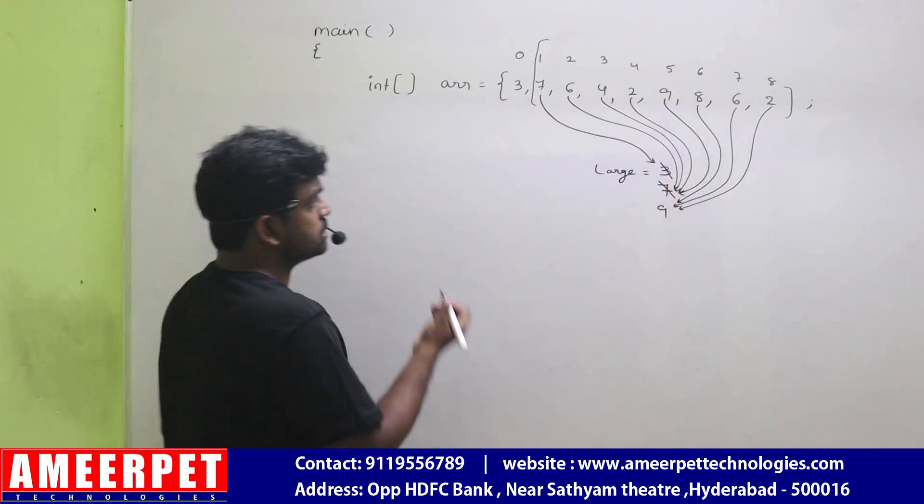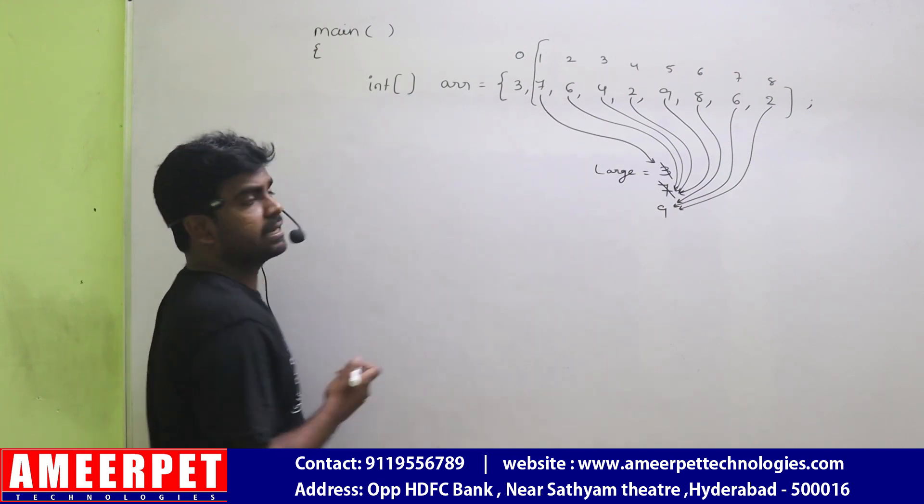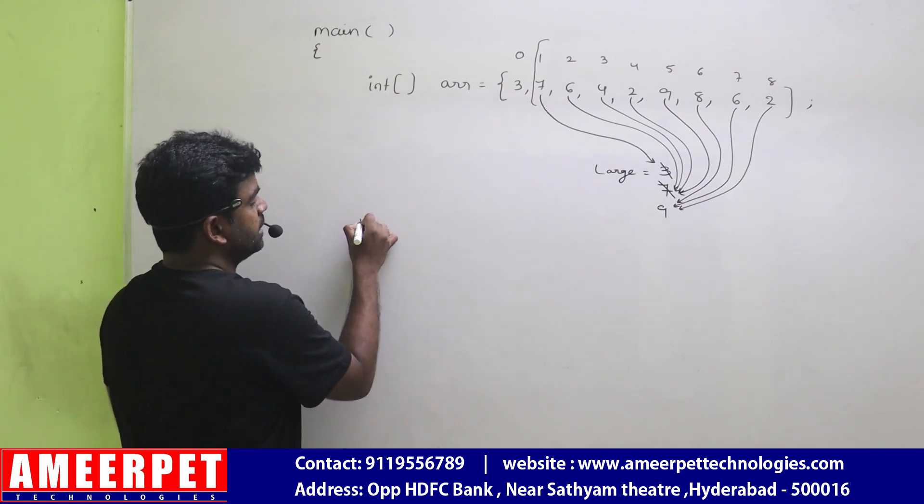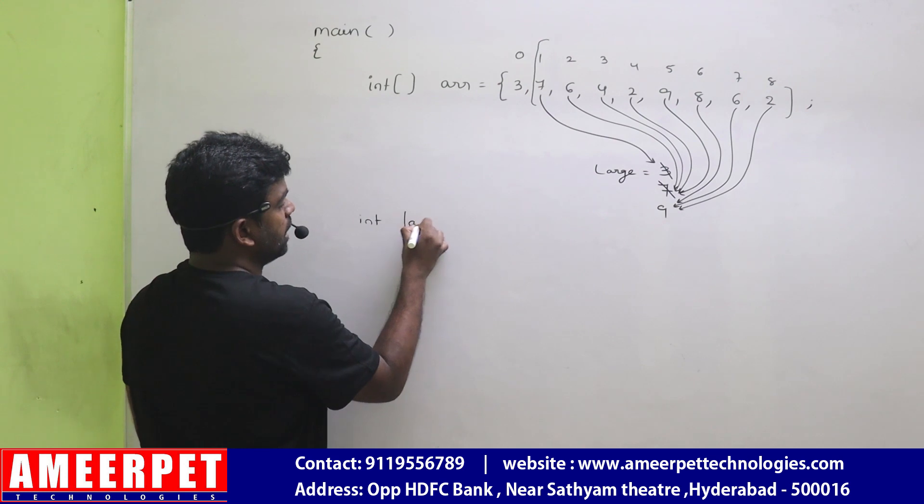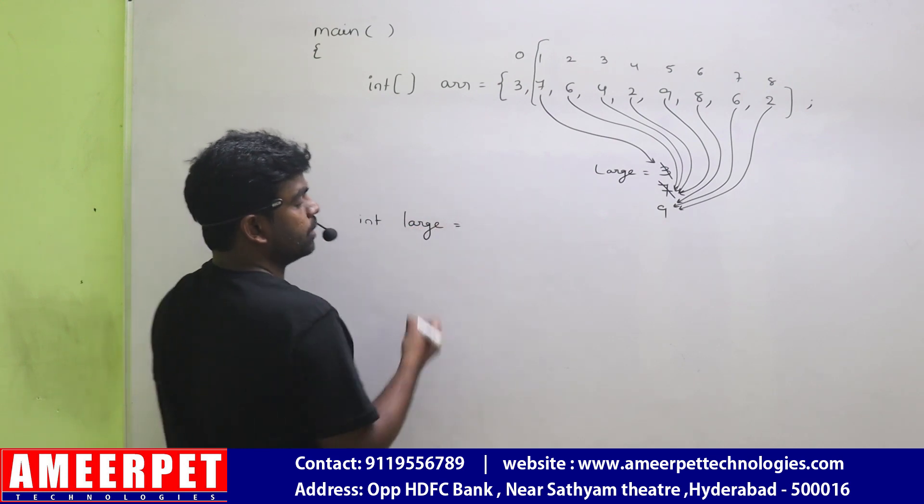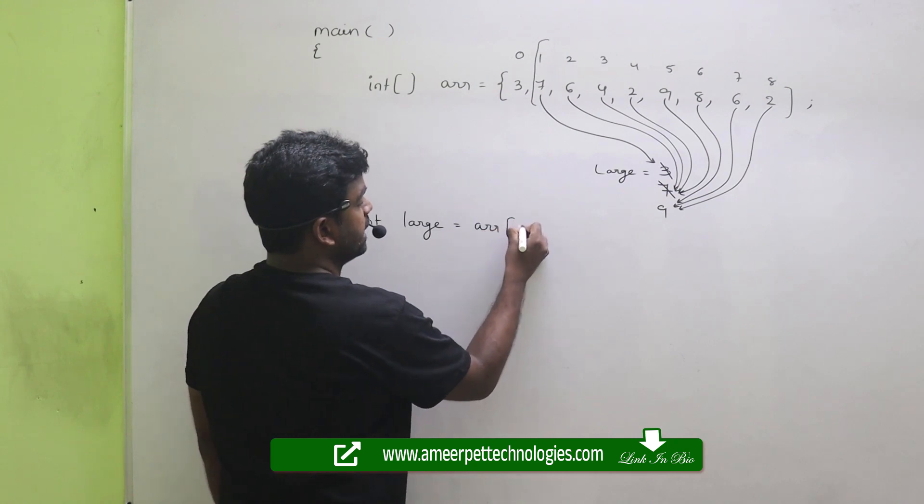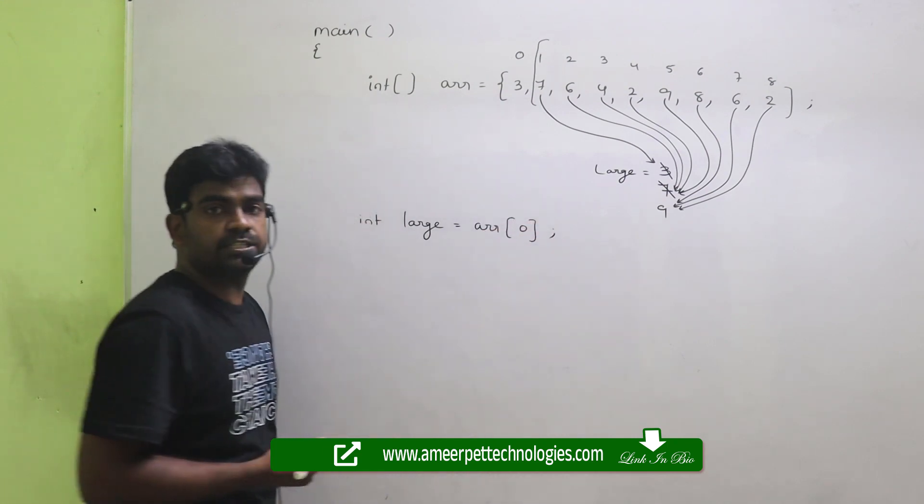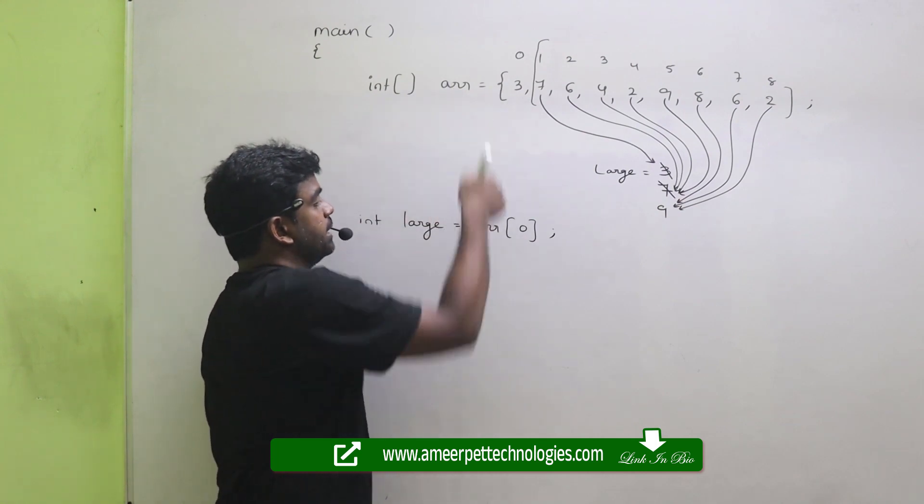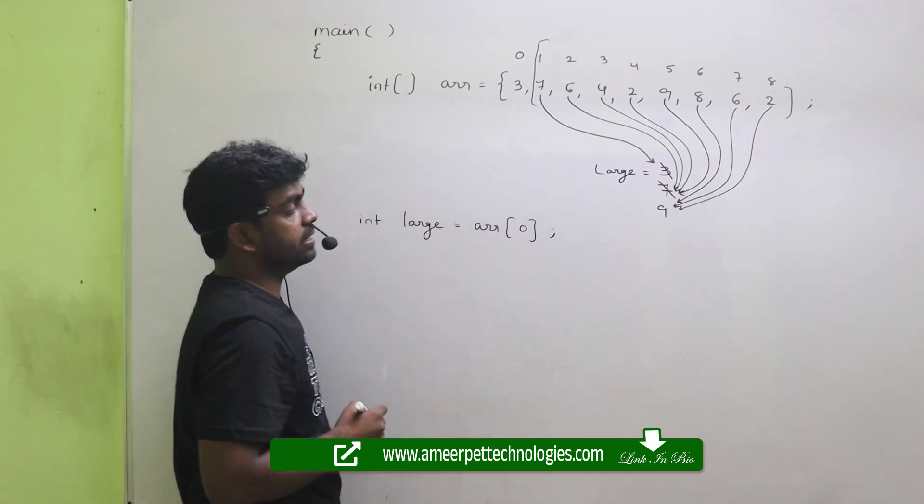So how to write the code? Simple. After declaration of that array, take one variable large equal to the first element. Arr of 0. The 0th location element we are storing into this large. So it is 3.